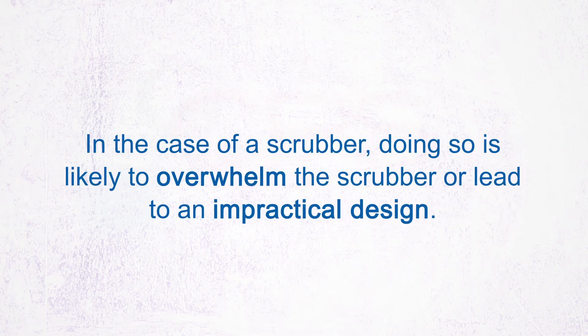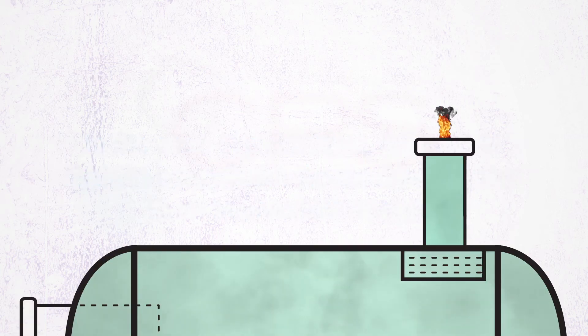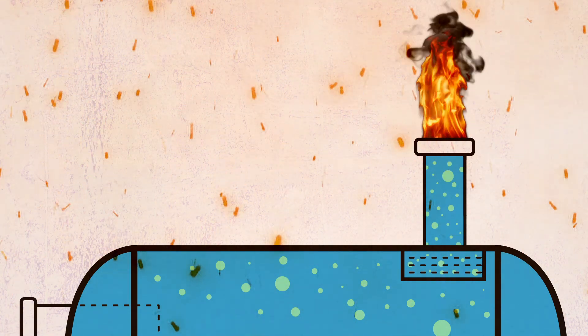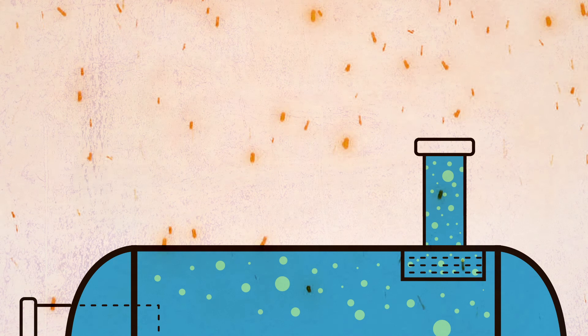In the case of a scrubber, doing so is likely to overwhelm the scrubber or lead to an impractical design. In the case of the flare, it can lead to burning rain, in which escaped liquid particles burn and remain on fire as they fall to the ground.